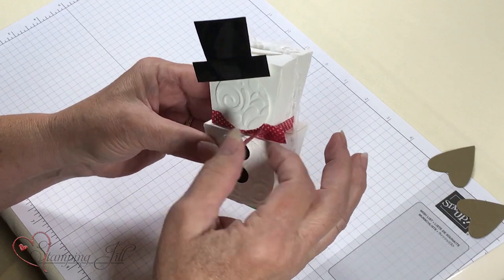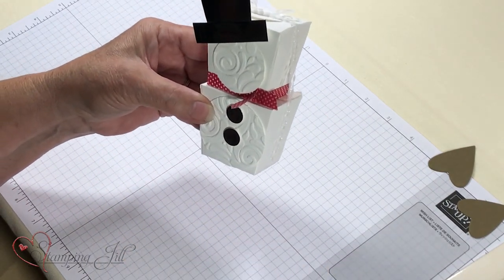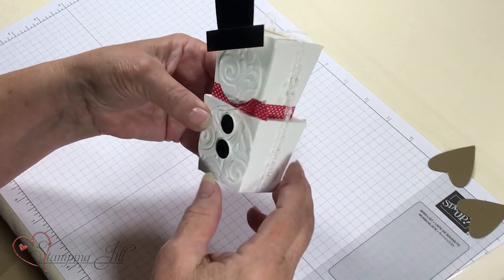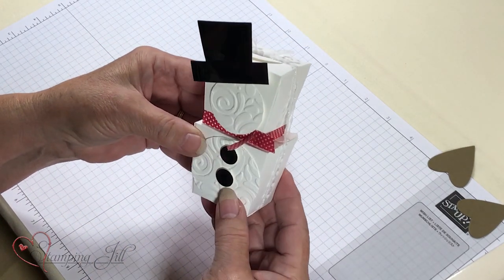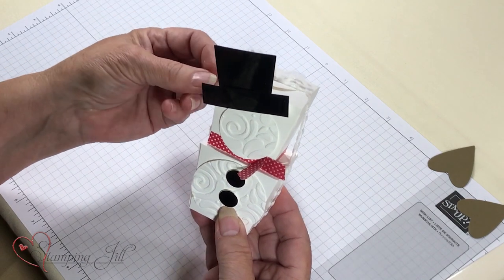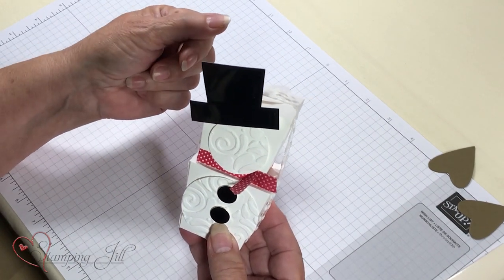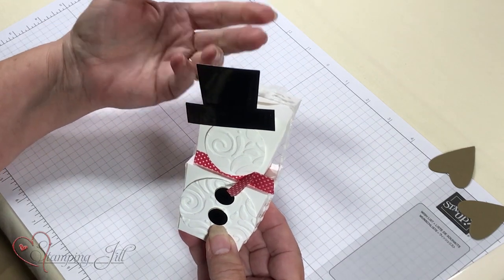This is washi tape right here on this one. I did it faceless. Can you tell? Usually these little boxes, if you were going to run it through a folder before you put it together.